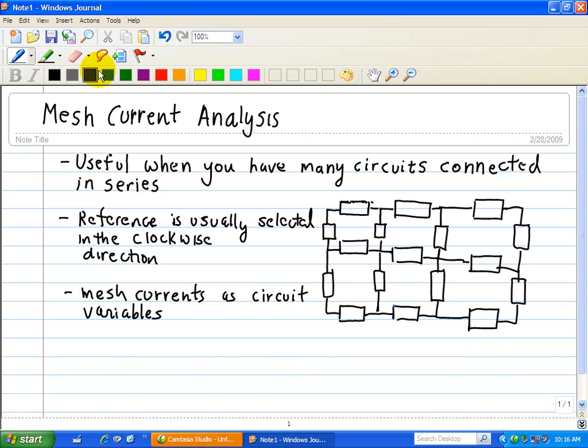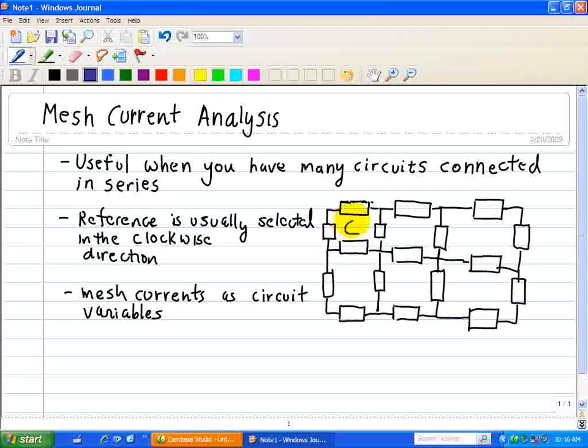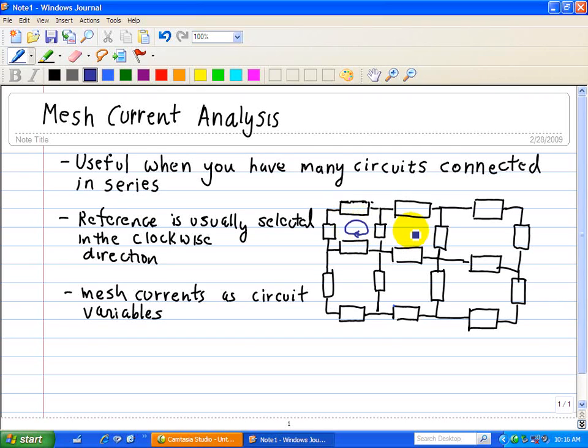So here is a mesh current. To review the terminology, a loop is a closed path formed by passing through an ordered sequence of nodes without passing through any node more than once. So here's a loop. That's a loop here. That's our corresponding mesh current. And that's a loop, and a loop, and a loop.